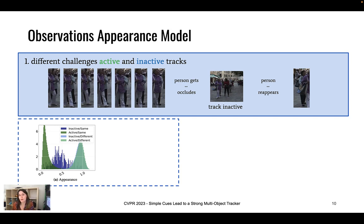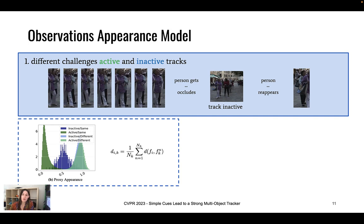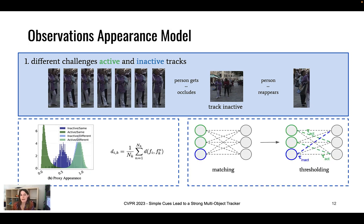Therefore we use two different appearance distance computations. The baseline uses a simple cosine distance between the last detection of the track and the new detections, which we still use for active tracks. However, for inactive tracks we use a different approach: we compute a proxy feature distance that takes into account all detections in the inactive track and takes the mean of the distances between those detections and a new detection. This gives a sharper appearance distance histogram for inactive tracks. Our second observation is that despite this improvement, the appearance distance histogram of inactive tracks still differs significantly from that of active tracks.